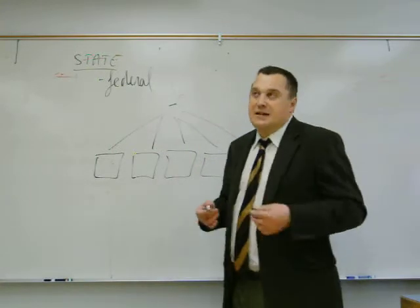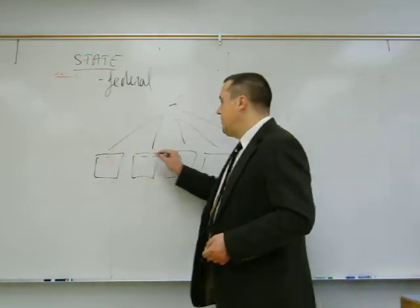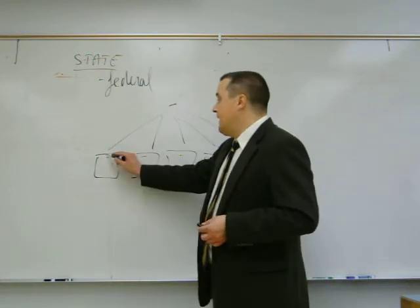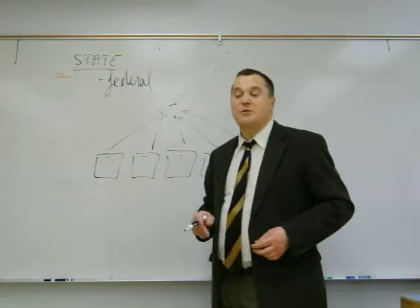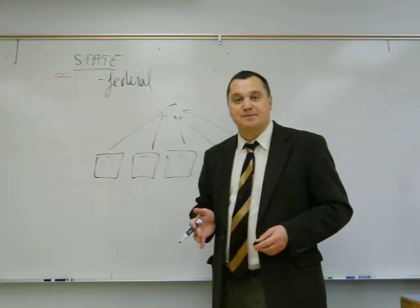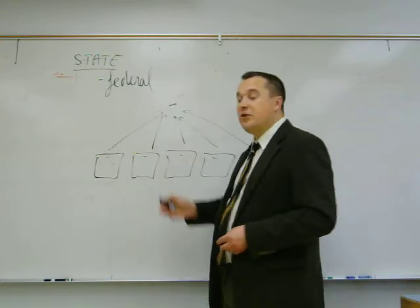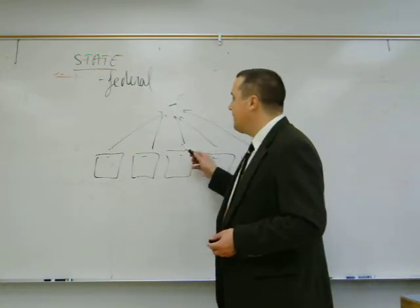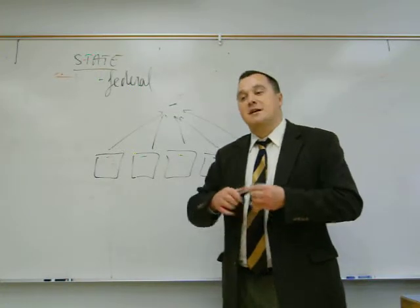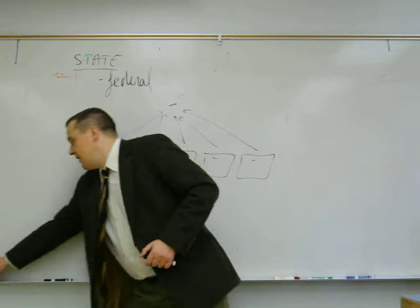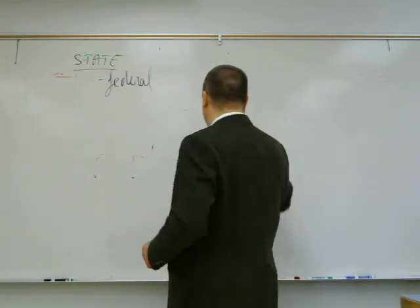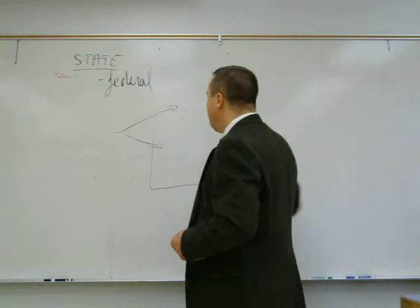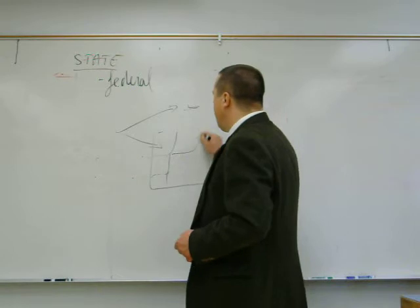The confederal form of government did not last, but it's important to know that this was the first form. It didn't last because that's one of the features of the confederal system — the regional units that have sovereignty delegate only parts of it to a national level, which is in charge of a few things like foreign affairs. It turned out they needed a more powerful central government, and there was also a common identity that would allow a new federal arrangement to be built.